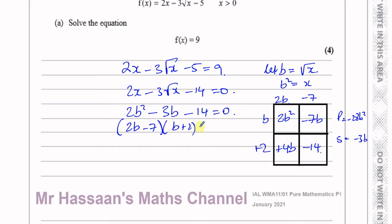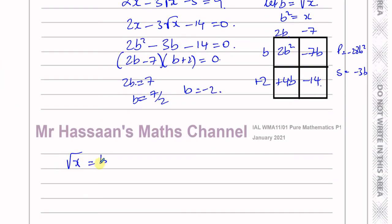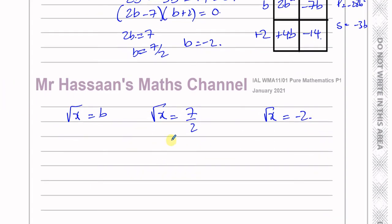That equals 0, so I have 2b minus 7 equals 0, giving b equals 7 over 2, or b plus 2 equals 0, giving b equals negative 2. Since b equals the square root of x, I can replace b with 7 over 2 or with minus 2. For b equals 7 over 2, this is the positive value — the positive square root of x equals 7 over 2, which is fine. So x equals 49 over 4, by squaring both sides.